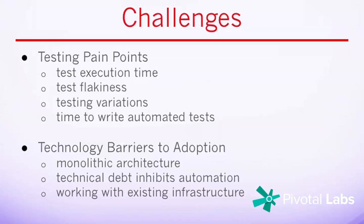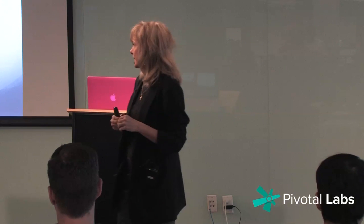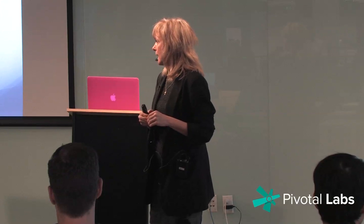Some testing pain points: test execution time — tests can take a long time. Test flakiness, which everyone complained about — where sometimes a test runs and passes, and sometimes it fails. It's very hard to deal with that situation. There were things like voting: if it runs two out of three times, call it a pass. Testing variations across different platforms is an issue. The time to write automated tests is also a concern. Then some technology barriers: companies with monolithic architectures had to start breaking them up. Technical debt can inhibit automation. And working with existing infrastructure.